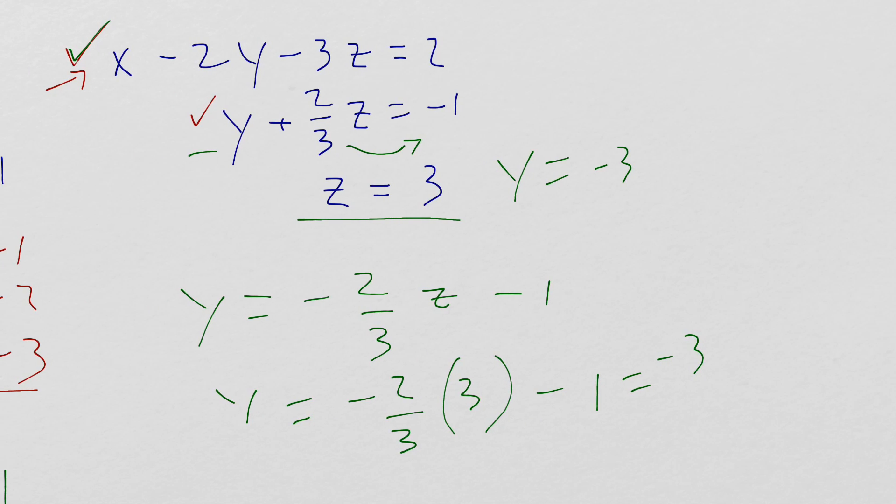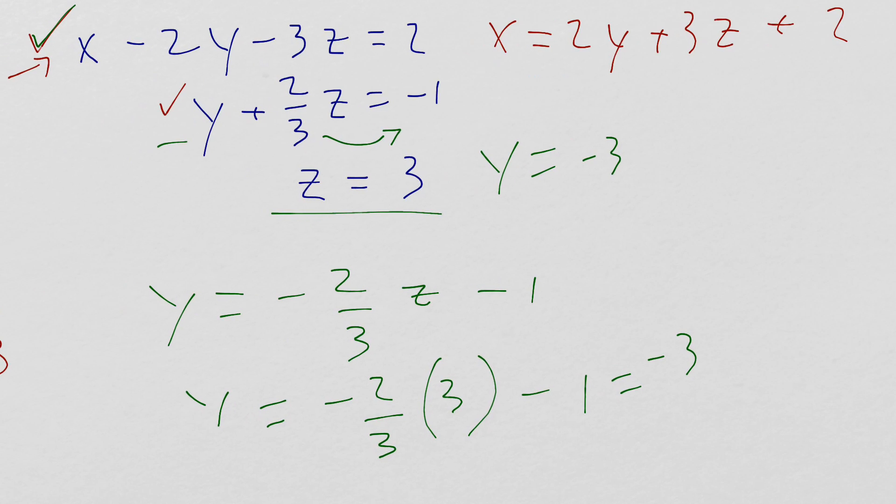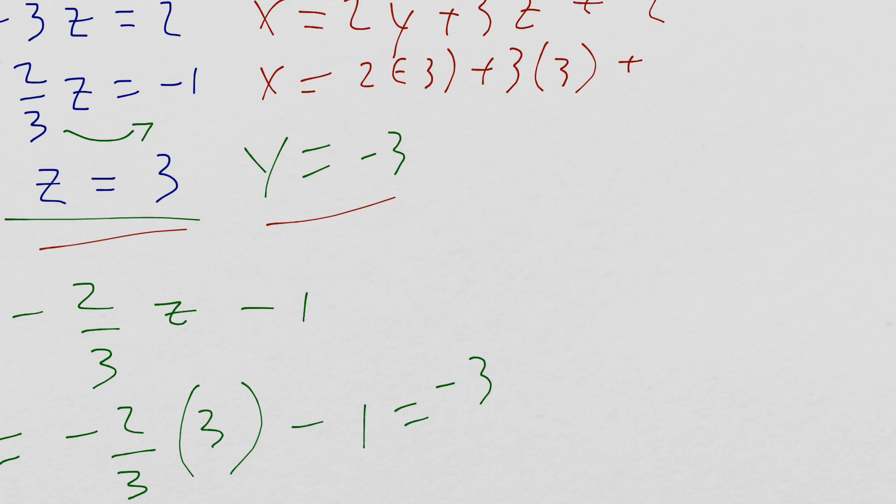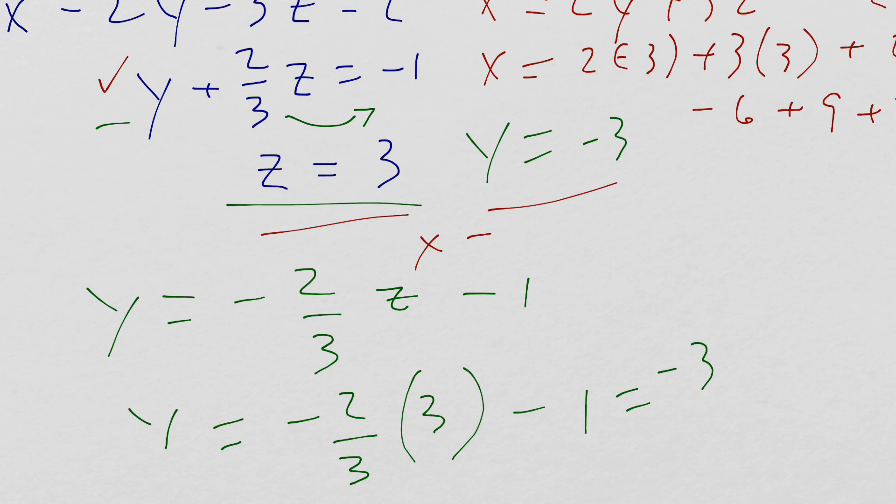I think I've got enough room over here, so I'm going to put it right here in red. I'm going to solve for x in the first equation. x equals 2y plus 3z plus 2. Substitute in my z and my y. I get x equal to 2 times negative 3 plus 3 times 3 plus 2. So negative 6 plus 9 plus 2 equals 5. So x equals 5.